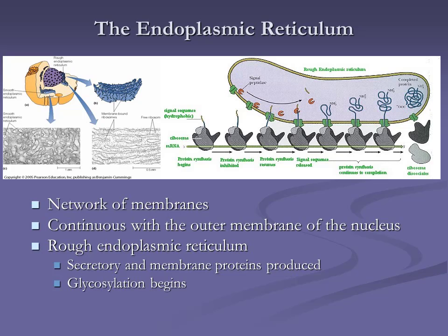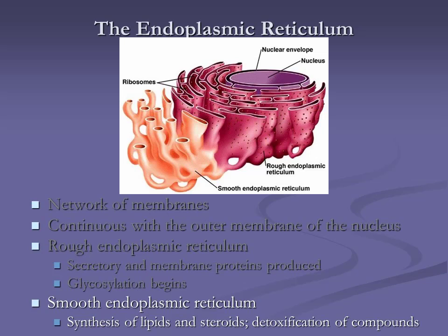Here we see the nucleus with its double membrane, the outer membrane continuous with the folds of the endoplasmic reticulum, and ribosomes dotted on it — that's rough ER. Other portions of the ER without ribosomes are called smooth ER, which is important for the synthesis of lipids and steroids. Primarily, smooth ER is responsible for producing more membrane. From the ER, material pinches off in vesicles and moves to the next stop in the processing pathway for secreted and membrane proteins.